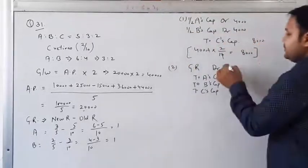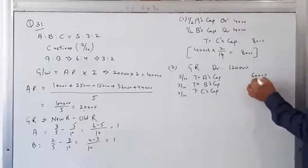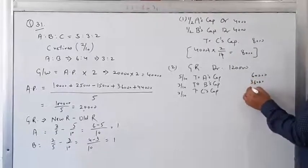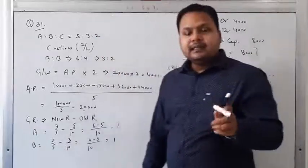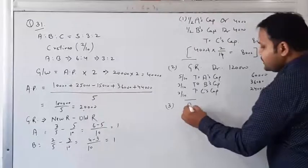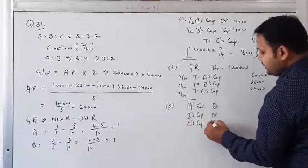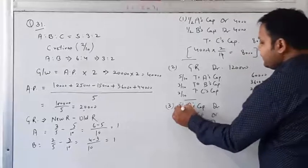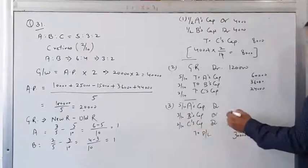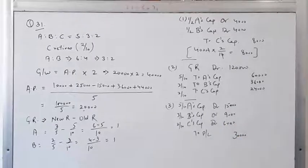General reserve of 19,000 will be distributed among all partners. P&L account has a debit balance of 30,000, which is an accumulated loss. This will also be distributed by all partners: A's capital, B's capital, C's capital debited to P&L account. In old ratio 5:3:2, the amounts are A = 15,000, B = 9,000, C = 6,000.